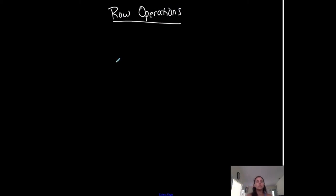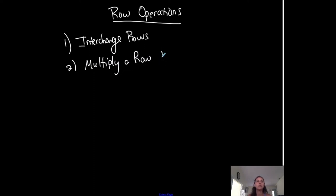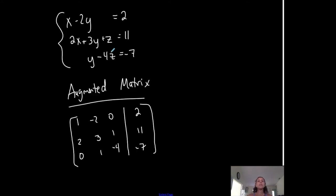Row operations. Let me talk about this real quick. What are you allowed to do to a matrix? You are allowed to interchange rows. You are allowed to multiply a row by a non-zero scalar number. And you are allowed to basically add rows together. So you can do a combination of three, or one at a time, or whatever. The row operations are used when you are using a matrix to solve a system of equations.